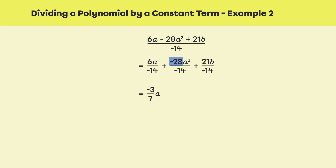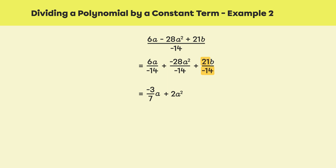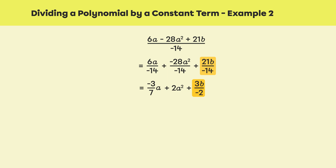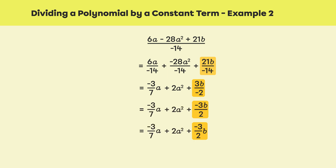For the second term, we have negative 28 divided by negative 14, which equals 2. Therefore, negative 28a² divided by negative 14 equals 2a². For the third term, we have 21 divided by negative 14, which equals negative 1.5. In fraction form, we have 3 over negative 2. So 21b divided by negative 14 equals 3b over negative 2. Here too, we write the negative sign in the numerator, which results in negative 3b over 2, or negative 3 over 2 times b, enabling us to separate the coefficient from the variable.